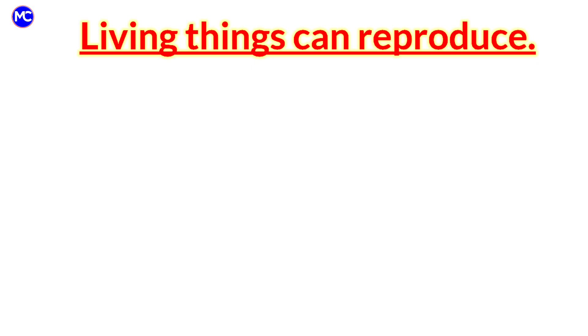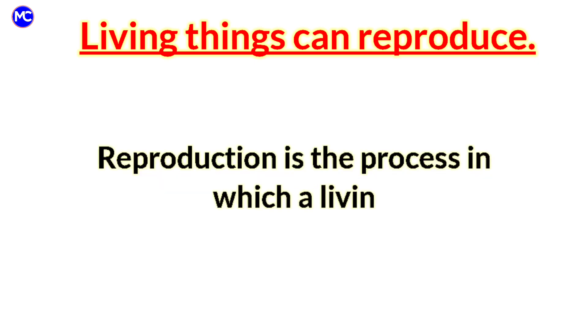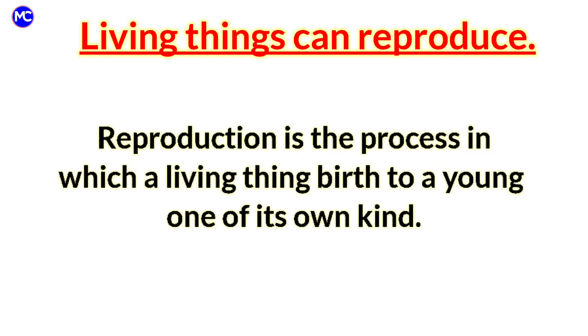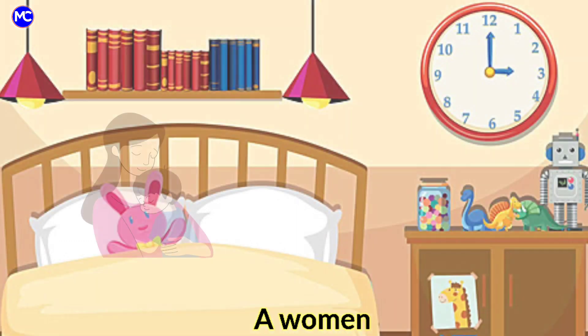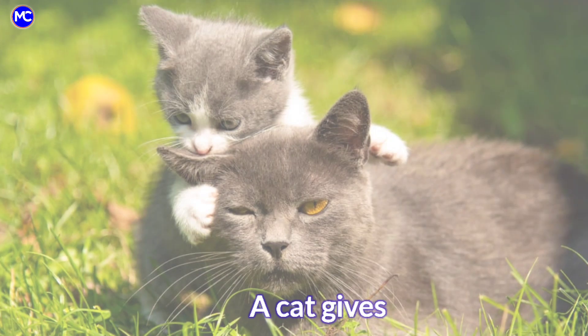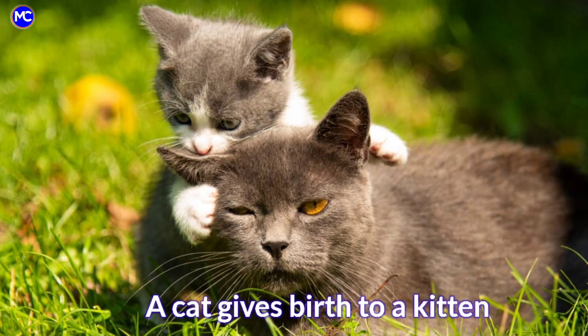Living things can reproduce. Reproduction is the process in which a living thing gives birth to a young one of its own kind. A woman gives birth to a baby. A cat gives birth to a kitten.